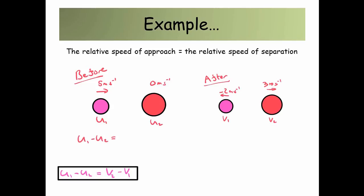So we're going to use our first part of our equation, U1 minus U2. That's equal to 5 minus 0, which is 5 meters per second. And then afterwards, we're going to use V2 minus V1, which is 3 minus minus 2. So minus minus 2 is plus 2, which gives us 5. So we've got 5 to begin with, 5 afterwards, so the relative speed of approach did equal the relative speed of separation. Therefore, we have got ourselves an elastic collision.